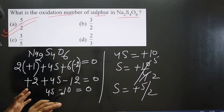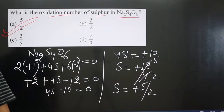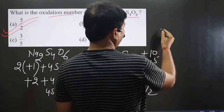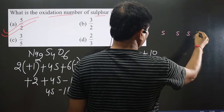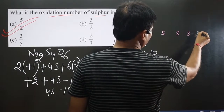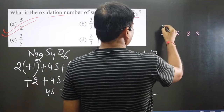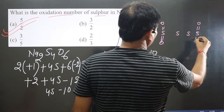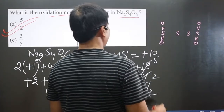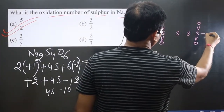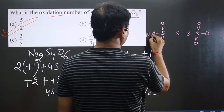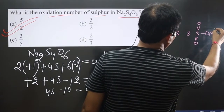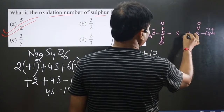Let's draw the structure of Na₂S₄O₆. There are four sulfur atoms: S1, S2, S3, S4. There are six oxygen atoms: O1 through O6 — four oxygens attached in the middle and one oxygen on each terminal end. Sodium has a +1 oxidation number and the terminal oxygens bonded to sodium have a −1 oxidation number, while the bridging oxygens are −2.